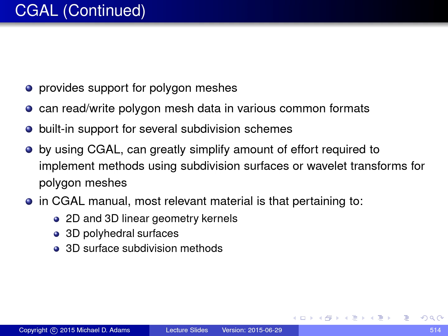In the CGAL manual, the most relevant material that pertains to what we're interested here, which is primarily subdivision surface-related functionality, are the 2D and 3D linear geometry kernels. The kernels are the core part of CGAL. It's very difficult to do much of anything with CGAL without using the geometry kernels. 3D polyhedral surface functionality, which is basically the polygon mesh functionality in CGAL, and 3D surface subdivision methods, which are the subdivision algorithms.